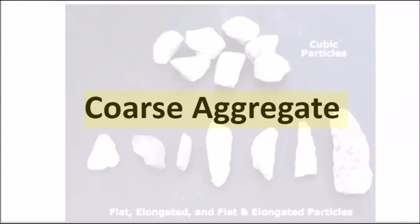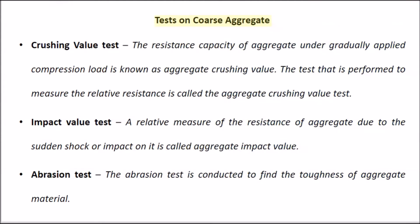Tests on Coarse Aggregate. Crushing Value Test: The resistance capacity of aggregate under gradually applied compression load is known as the aggregate crushing value, and the test measuring this relative resistance is called the aggregate crushing value test. Impact Value Test: A relative measure of the resistance of aggregate to sudden shock or impact is called the aggregate impact value.